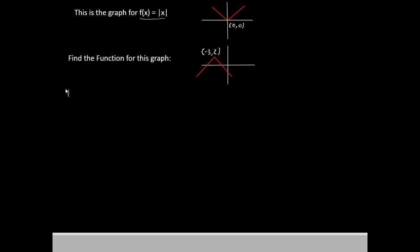Our first transformation is that we have changed the x coordinate of the vertex. It was 0, now it's negative 3. That means we have moved it to the left by 3 points.